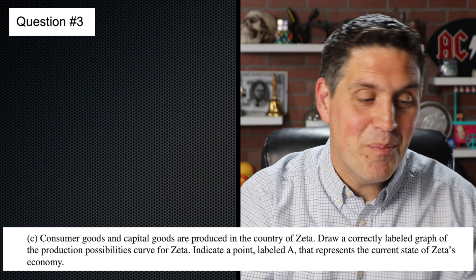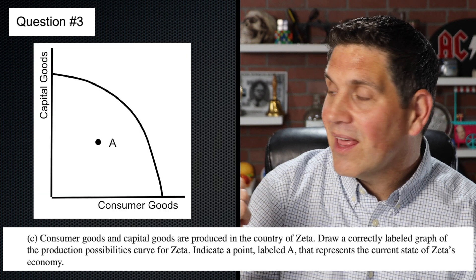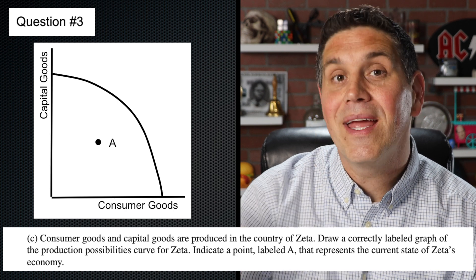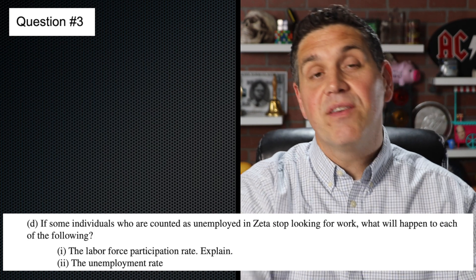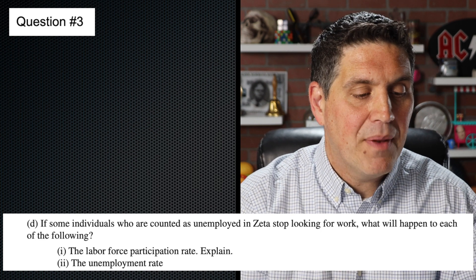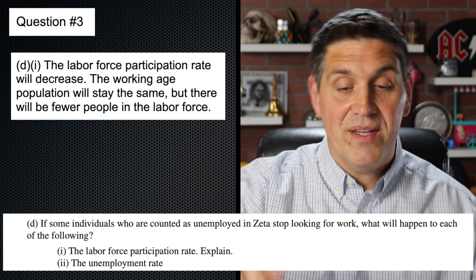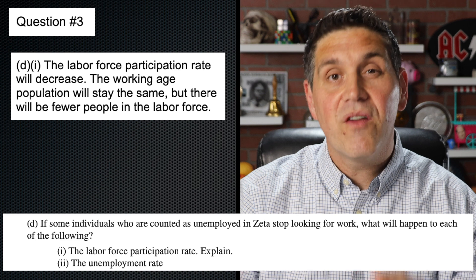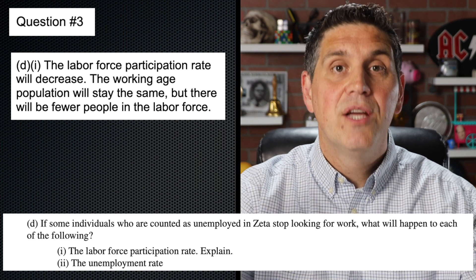C was actually easier than B — to show where the economy is using the production possibilities curve. It looked like this: we had a negative output gap, so point A is somewhere inside the curve. And in D, it goes back to talking about unemployment. It said if some people leave the labor force — the people who are unemployed leave — what's going to happen to the labor force participation rate? That is going to decrease. The same number of people in the working-age population, but fewer of them in the labor force, would cause the labor force participation rate to fall.